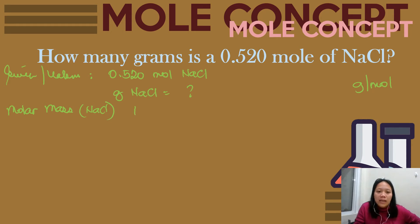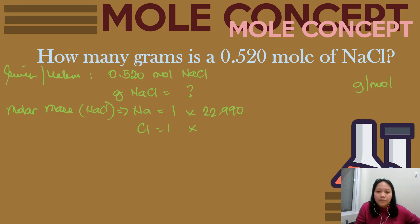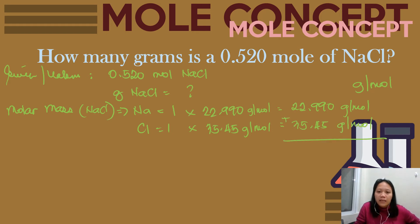To find the molar mass of sodium chloride: Na has 1 atom at 22.990 g/mol, and Cl has 1 atom at 35.45 g/mol. Multiply each by their count to get 22.990 g/mol and 35.45 g/mol. Add the products to get 58.44 g/mol — the molar mass of sodium chloride.